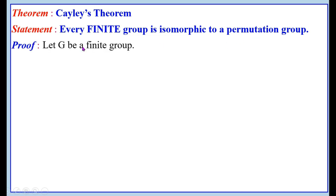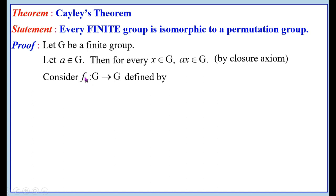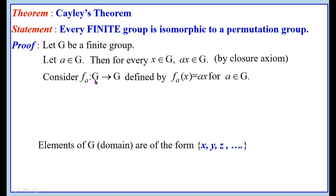Proof. Let G be a finite group. Let A belong to G. Then for every X belonging to G, by the closure axiom, A into X also belongs to G. Let us consider a function F_A from G to G itself, defined by F_A(X) = A into X, for A belonging to G.